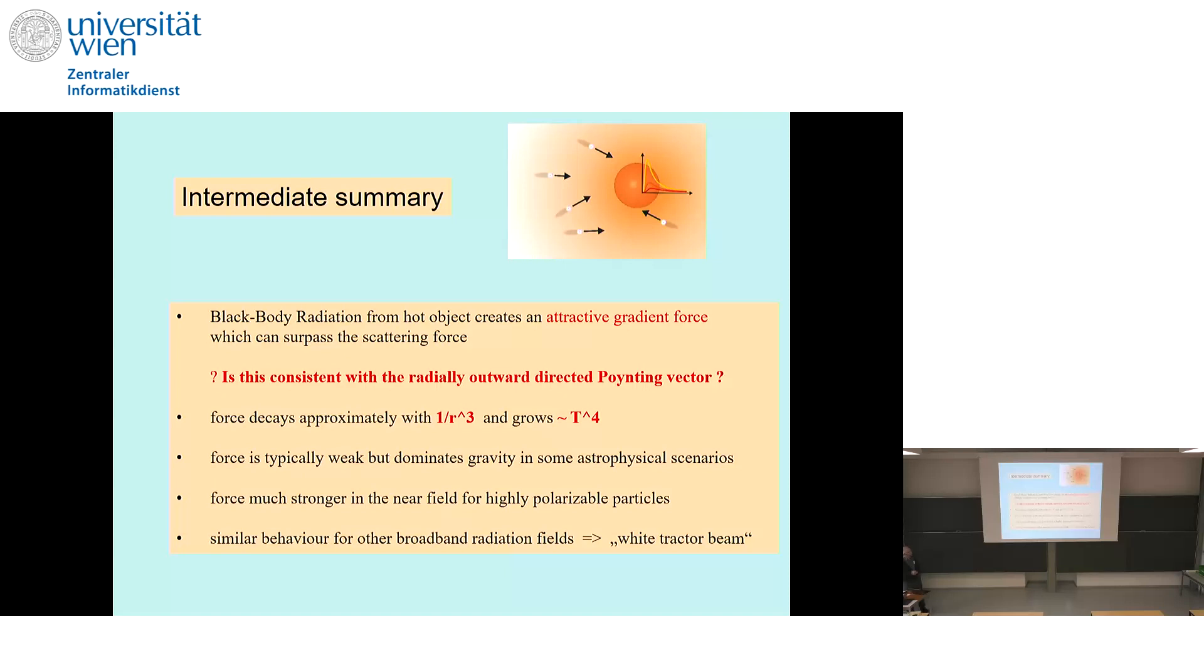If we take lithium, we see it's the opposite. Lithium is pushed away at the sun temperature, already quite strong. Solar winds will push out lithium, but they will keep the hydrogen and the helium, if we consider the radiative force. We see that the black body radiation from a hot object actually can have a dominant gradient force surpassing the scattering force. There is a discussion if this could be compatible with pointing vector arguments. It's one over r cubed force and grows with fourth power of temperature. It's very weak, but there are some cases where it's comparable to gravity. The force is bigger for larger polarizable particles or more complex atoms, but also the radiation pressure force is bigger.